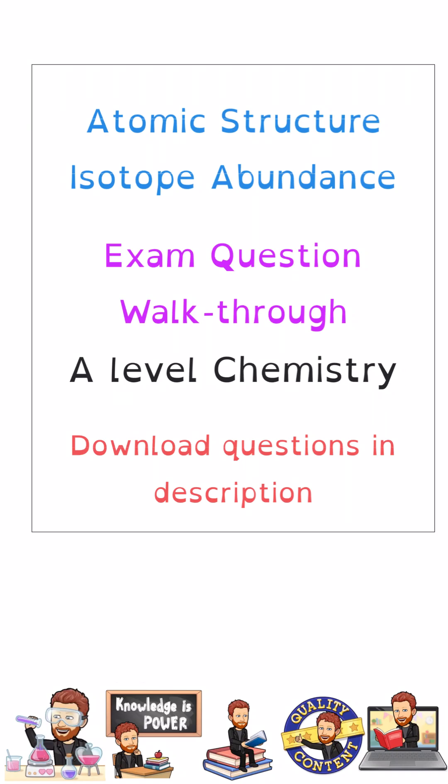Hello and welcome to this A-level chemistry exam question walkthrough, where I'm going to be taking a look at an atomic structure question, specifically about isotope abundance. Feel free to download the question in the description, have a go at it yourself, and then watch my video to see how you got on. When I'm going through the question, I will be modelling my thinking behind the question and writing that in blue, and the answers that are going to get you the marks will be written in purple.